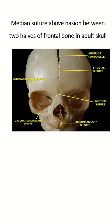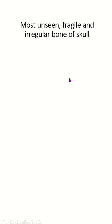What is the metopic suture? The metopic suture is the median suture above the nasion, between the two halves of the frontal bone in the anterior skull.